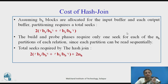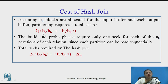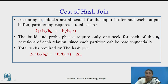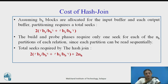Assuming Bb blocks are allocated for input and output buffers, the total seek operations are Br/Bb plus Bs/Bb, multiplied by 2. Since build and probe phases require 1 seek per partition of each relation — as each partition can be read sequentially — the total number of seek (SIC) operations will be 2*(Br/Bb + Bs/Bb) + 2*Nh.